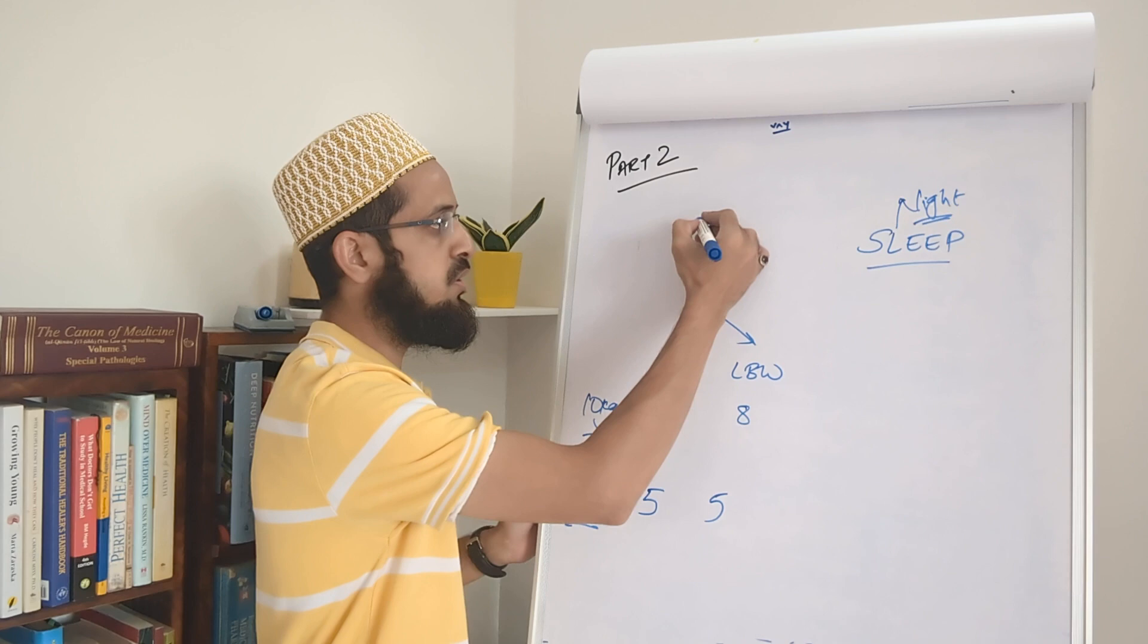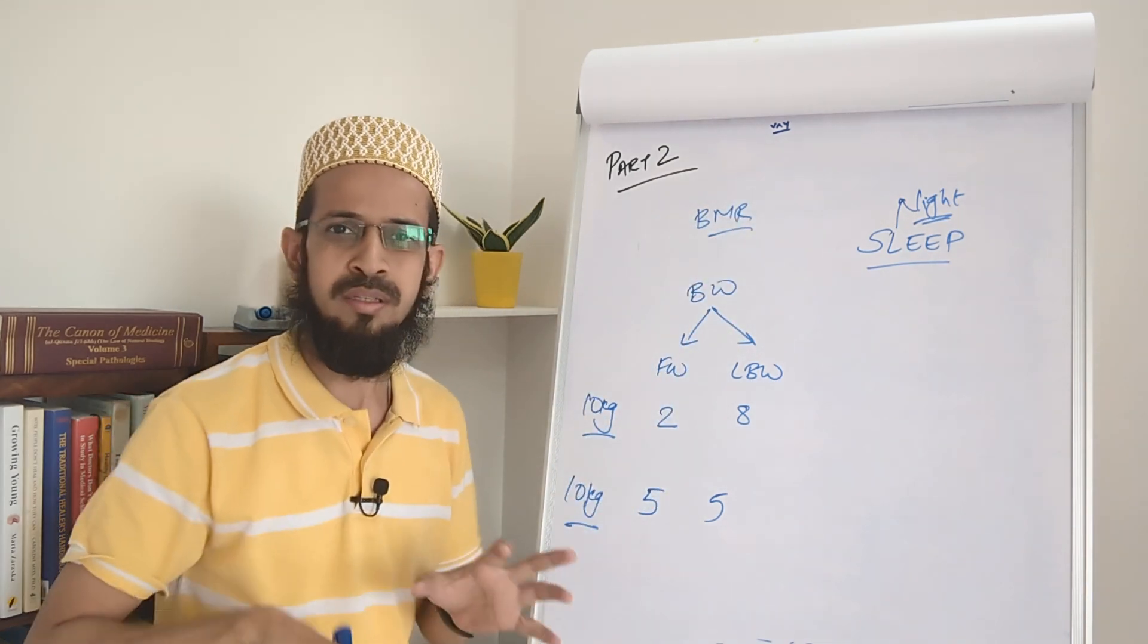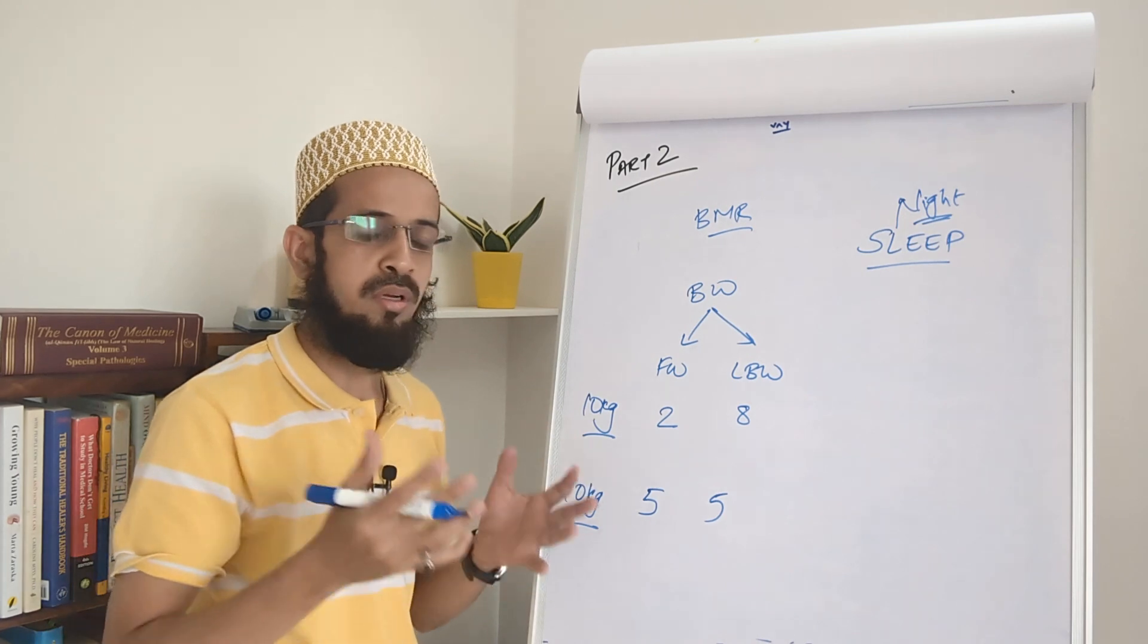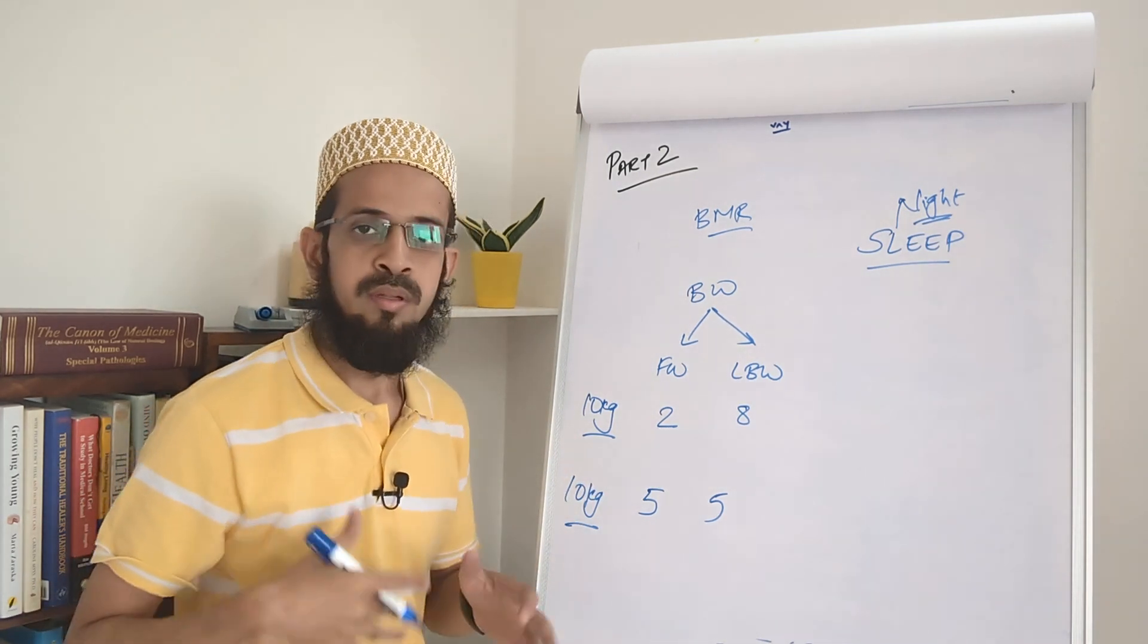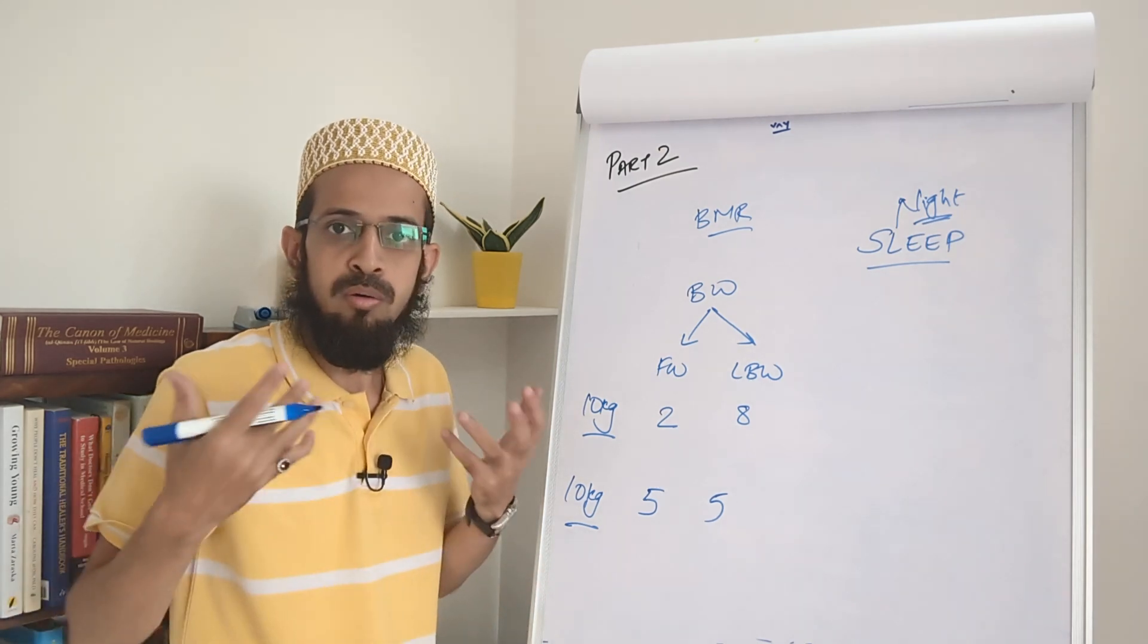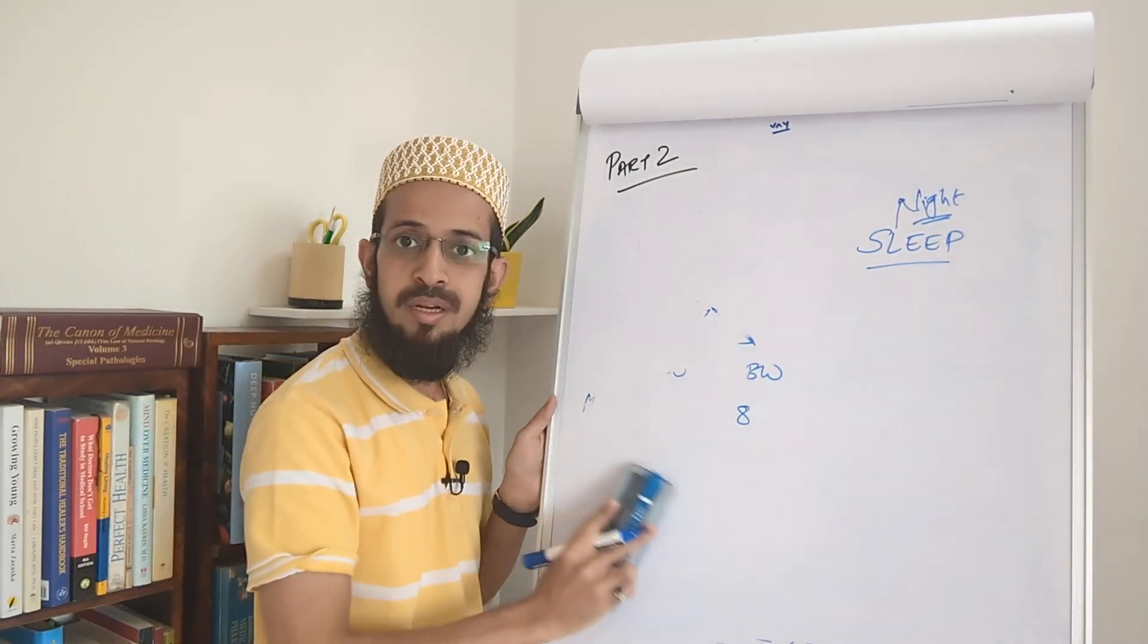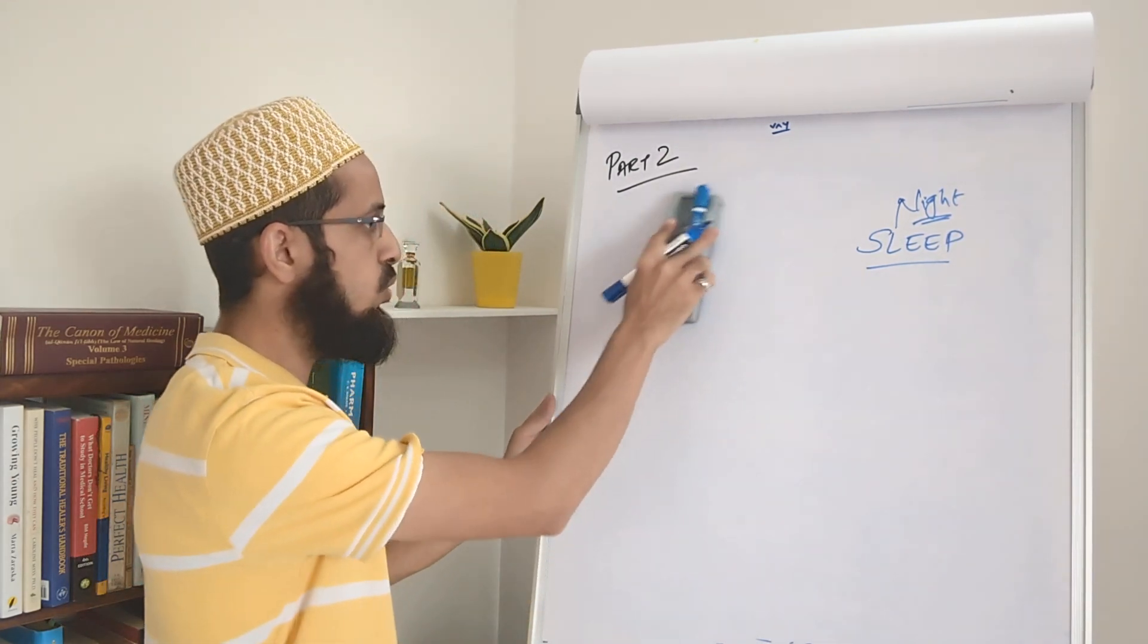Not just that, people talk about BMR, which is basal metabolic rate - that my BMR is low, my BMR is slow, my BMR is fast. The entire BMR is dependent on the quality of your sleep. If your sleep quality is compromised, your BMR can go down, your ability to burn fat can go down, your hunger hormones will increase. So let's understand how night sleep is impacting your ability to eat healthy and how it is impacting your ability to exercise.